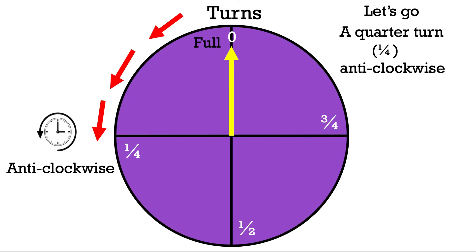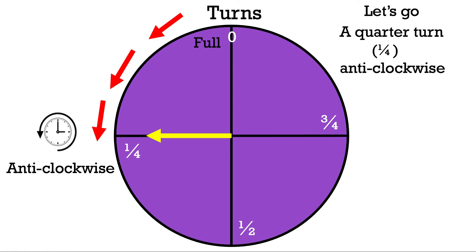Now let's do an anticlockwise turn. We'll start with a quarter turn in the anticlockwise direction — this time we go to the left. We move the spinner to the left and stop at a quarter turn. We went in the anticlockwise direction, moving one section of the circle.